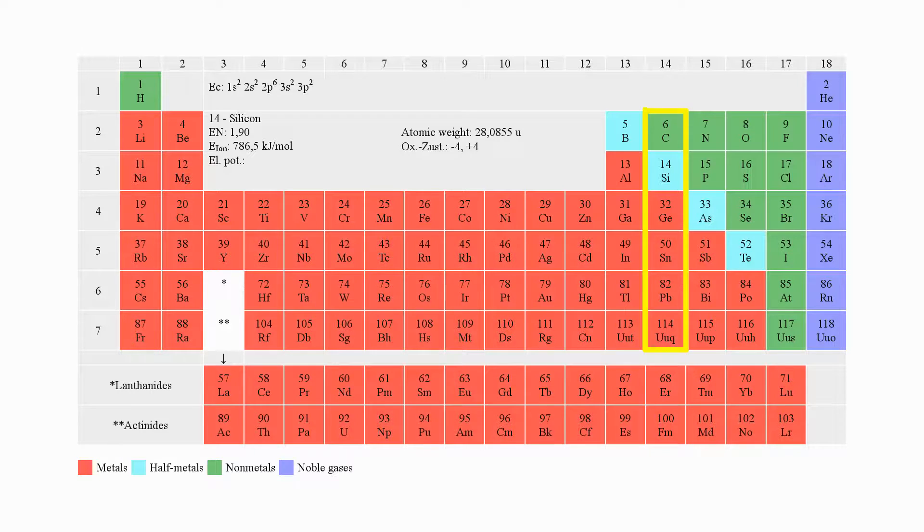All those elements have four valence electrons, which is why their chemical properties are very similar. Today, silicon is the most common material used for the production of semiconductors.